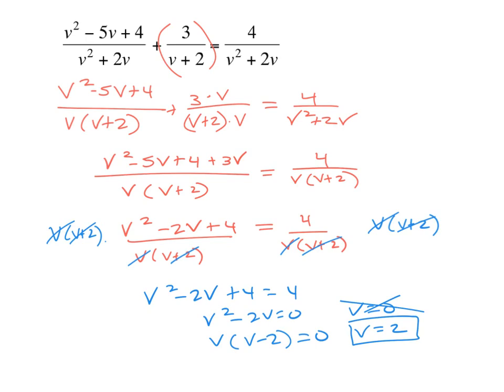If we had cross-multiplied instead of noticing we could cancel the denominators, it wouldn't be incorrect, but it would make our work much more complex — we'd have a quadratic times a quadratic, ending up with quartics to factor, which is very messy. So we need to pay attention and simplify as soon as possible rather than waiting. Hope that helps — good luck studying!